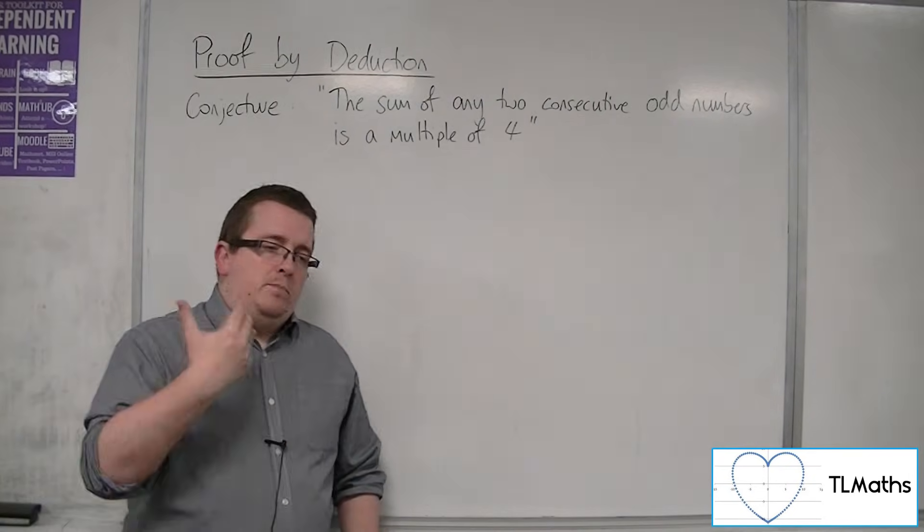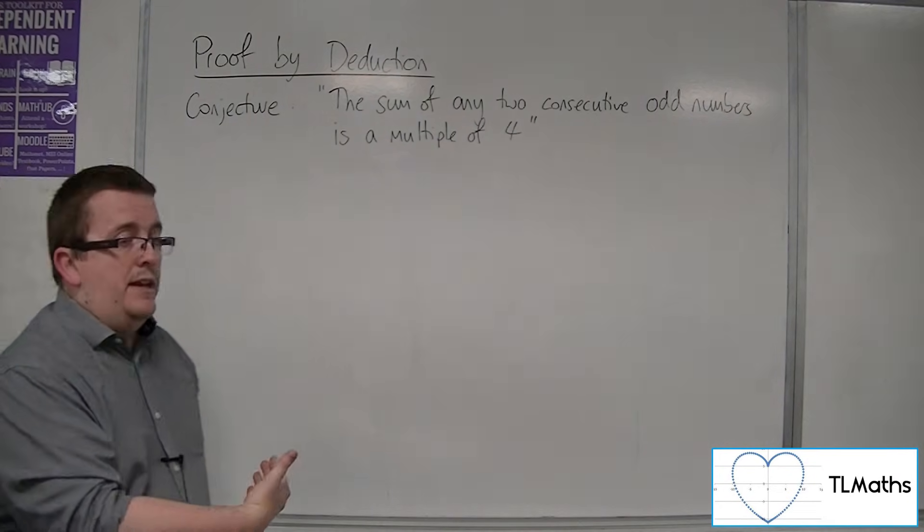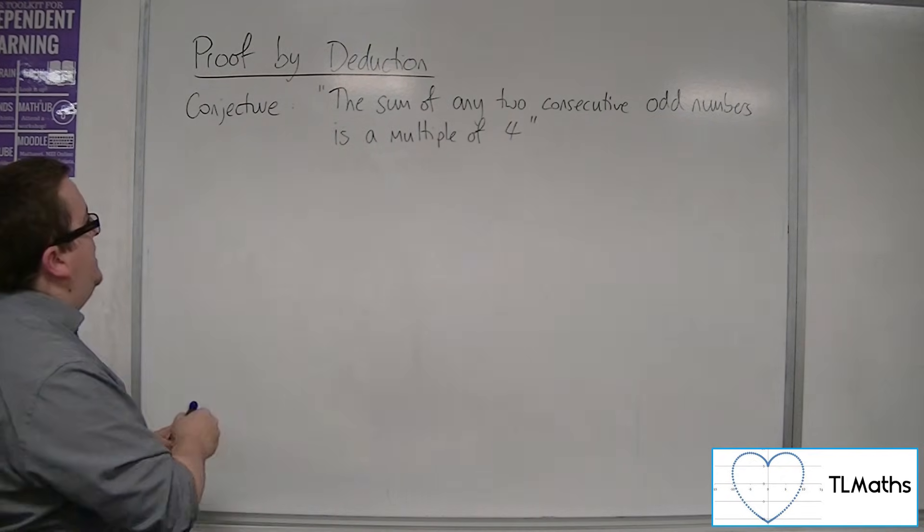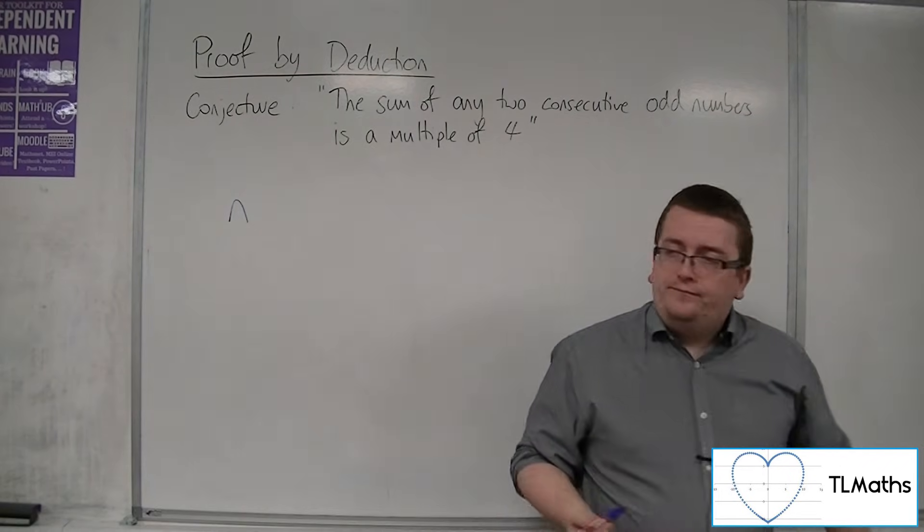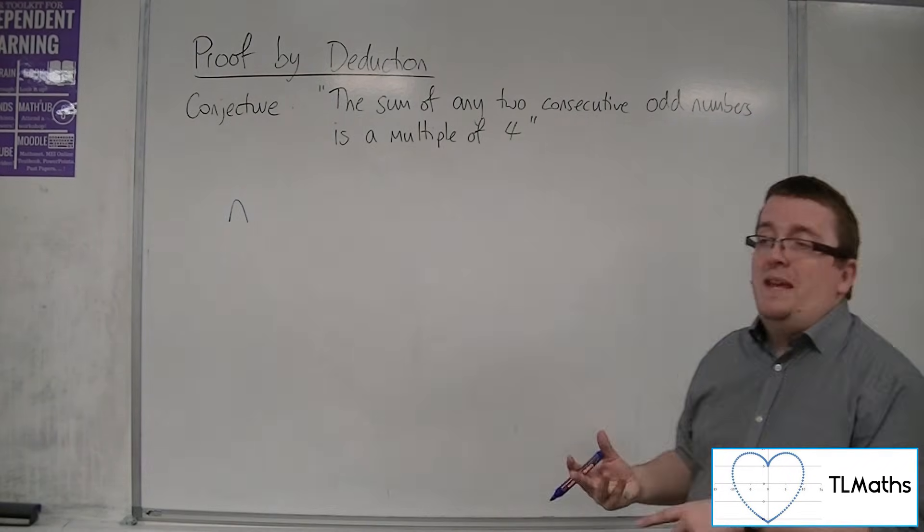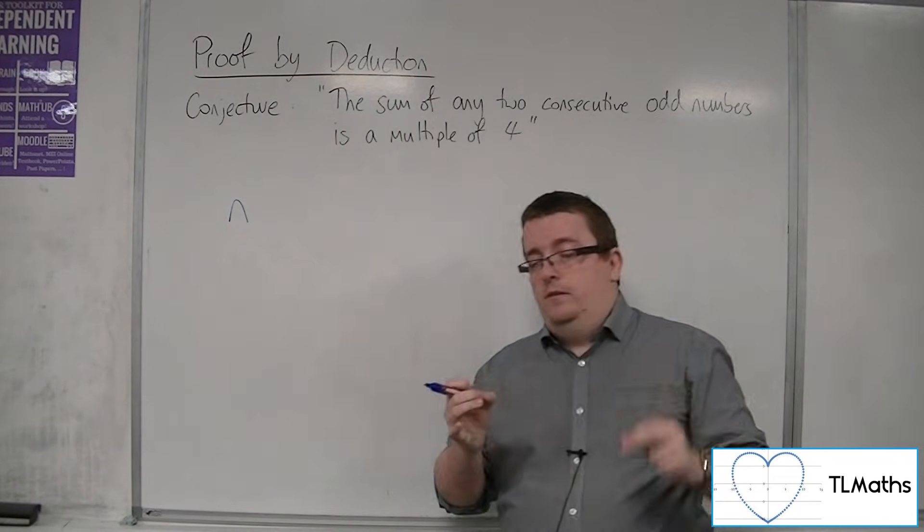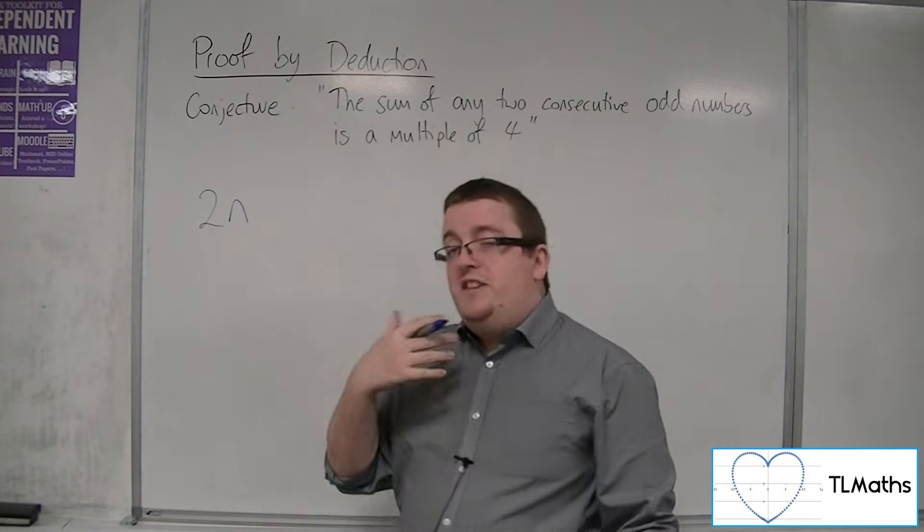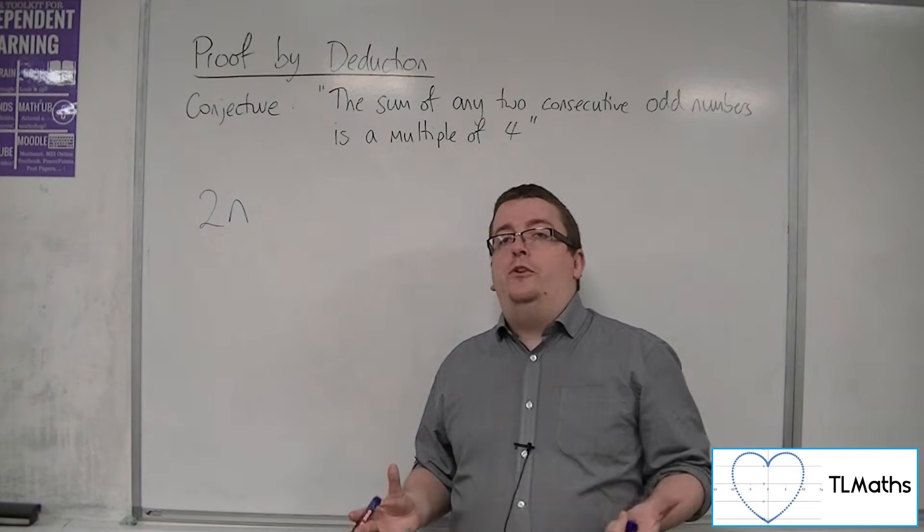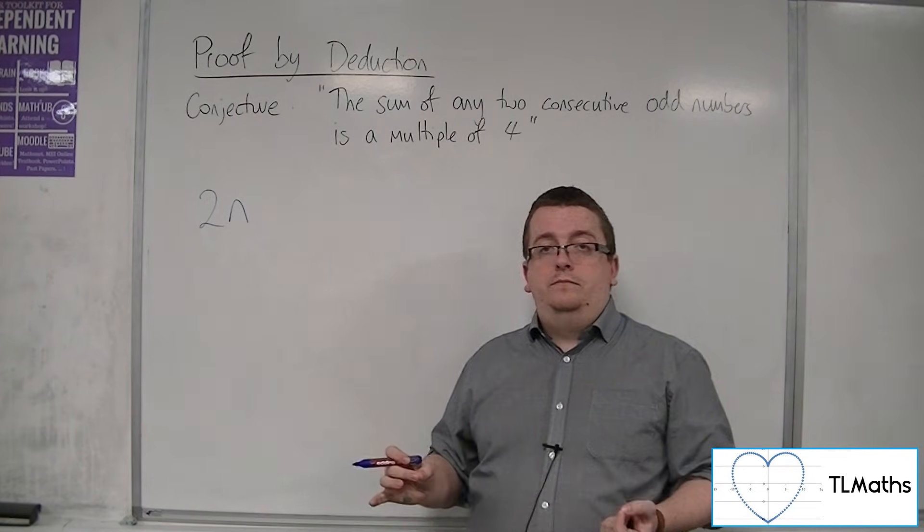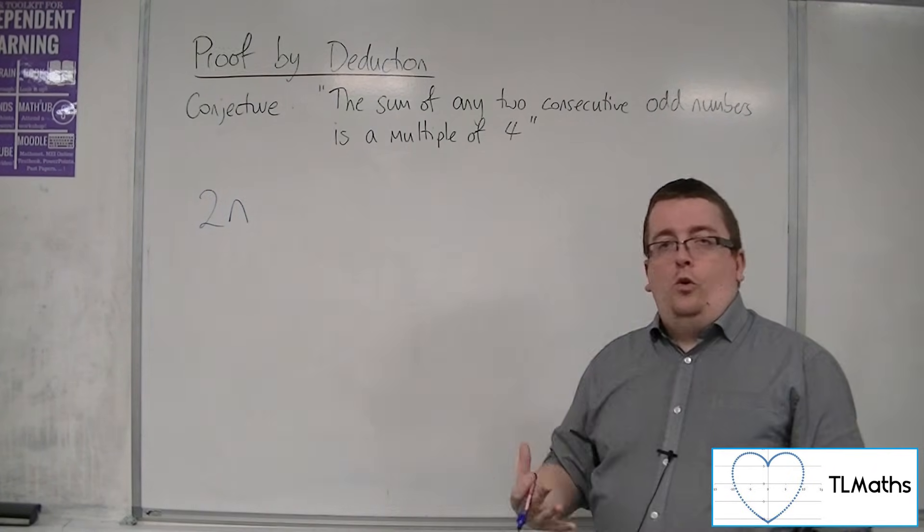In order to prove that, we first need some form of representing an odd number, because if I just write down the number n, where n is a whole number, then n could be either even or odd. I can make it even by sticking a 2 in front, because now I've got something that is a multiple of two, and any multiple of two is an even number. So 2n, regardless of what n is, will always be even.